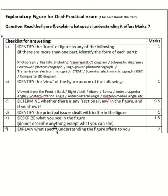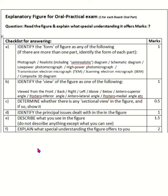This is the checklist for Exploratory Figure. For identification in the form of the figure, 1 mark; identification of the view of the figure, 1 mark; any sectional view identification, 0.5 marks; identify the principal issue, 1 mark; describe what you see in this figure, 1.5 marks; explain what special understanding the figure offered to you, 2 marks.